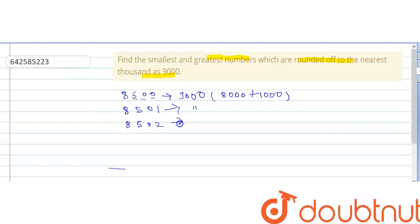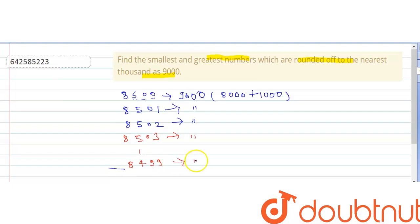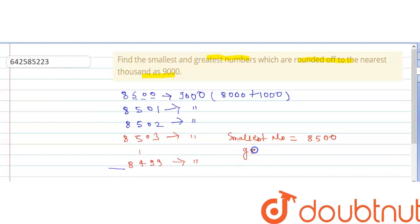Similarly, 8502, 8503, and so on all give 9000 after rounding up. Even 8493 gives 9000 after rounding up. So the smallest number which can give 9000 after rounding up is 8500. And the greatest number which will give 9000 after rounding up...